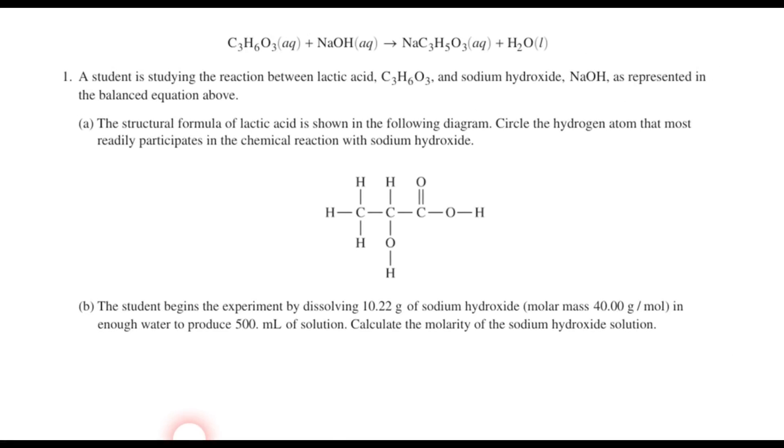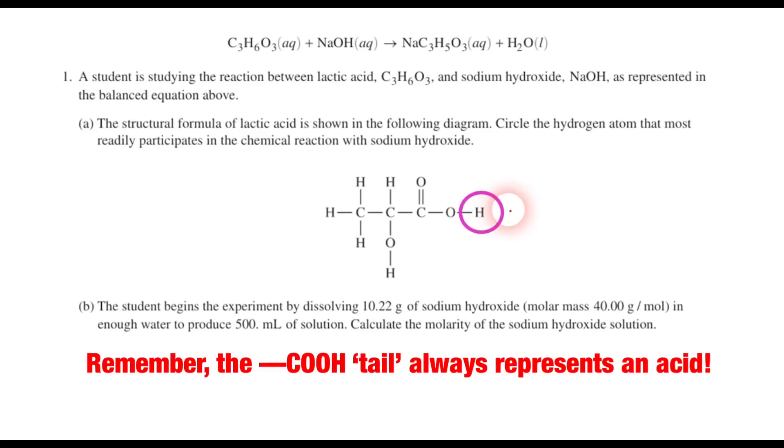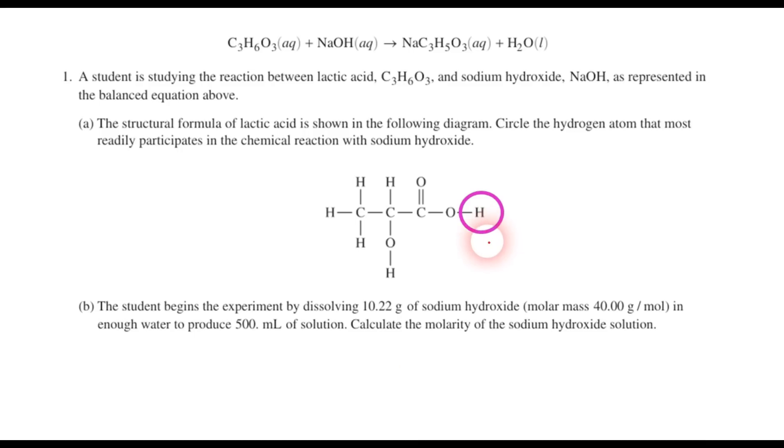So question one is a long essay question. This is worth a whopping 10 points, and we can see that there's a balanced equation up here. It says that a student is studying the reaction between lactic acid, C3H6O3, and sodium hydroxide, and NaOH is represented in the balanced equation. We have the structural formula of lactic acid given here, and it says, circle the hydrogen atom that most readily participates in the chemical reaction with sodium hydroxide. Well, that should be the terminal hydrogen atom over here, the one that is going to ionize the most easily.